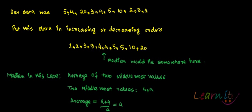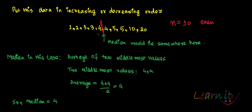In increasing order it is: 1, 2, 3, 3, 4, 4, 5, 5, 10, 20. Median is that value which divides the entire data set into two parts. There are 10 data points here, so n is even. When n is even, the median is given by the average of the two middle values — the fifth and sixth values. The fifth and sixth values are both 4, so the average is 4. So four is the median value, dividing the entire data set into two parts.